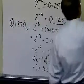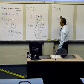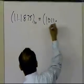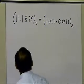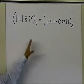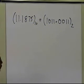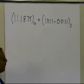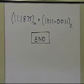So 11.1875 in base 10 equals 1011.0011 in base 2 — combining the integer part 1011 and the fractional part .0011. This is just another, more intuitive approach for finding the equivalent binary notation for a decimal number, and that's the end of this segment. Thank you.